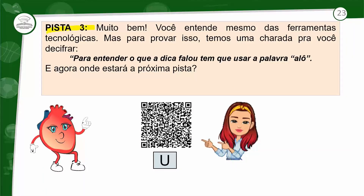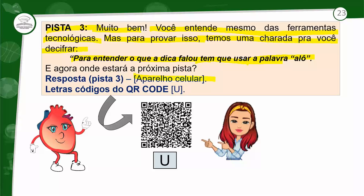A terceira pista: muito bem! Você entende mesmo das ferramentas tecnológicas. Mas, para provar isso, temos uma charada para você decifrar: para entender o que a dica falou, tem que usar a palavra alô. Onde é que a gente fala alô? No aparelho celular. Então, a próxima pista está no aparelho celular. Lá no aparelho celular ele vai achar a próxima pista. A letra que ele vai anotar é a letra U.